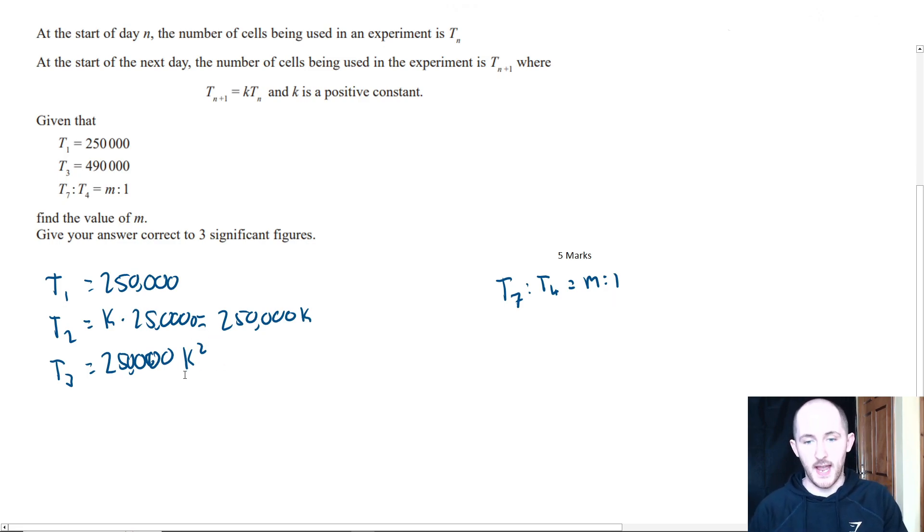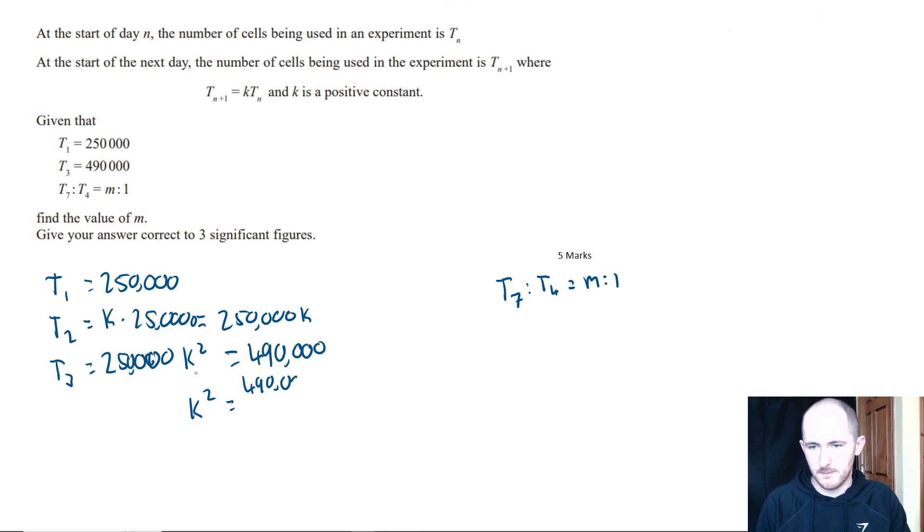We know that t_3 is equal to 490,000. So what we're going to do is divide both sides by 250,000. We can actually cross out all of these zeros because they're common in both, so we're just left with 49 over 25.